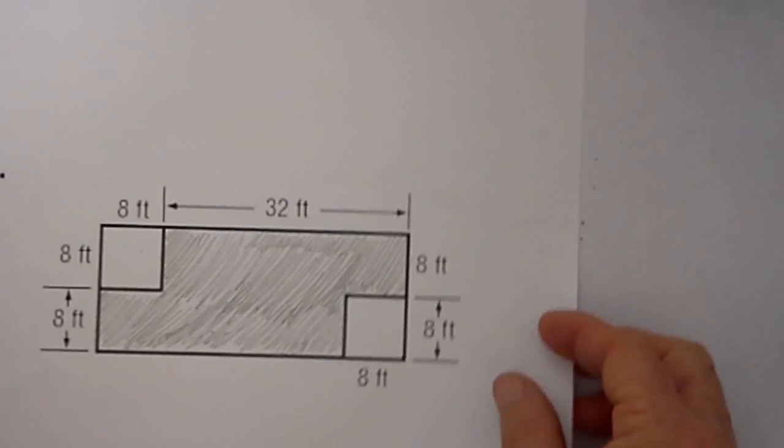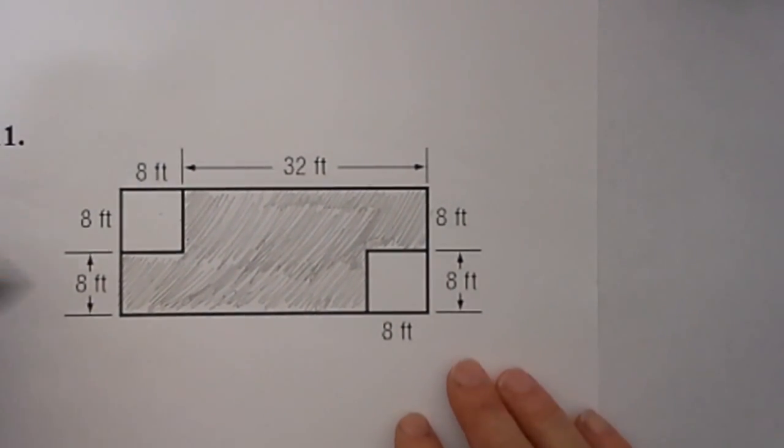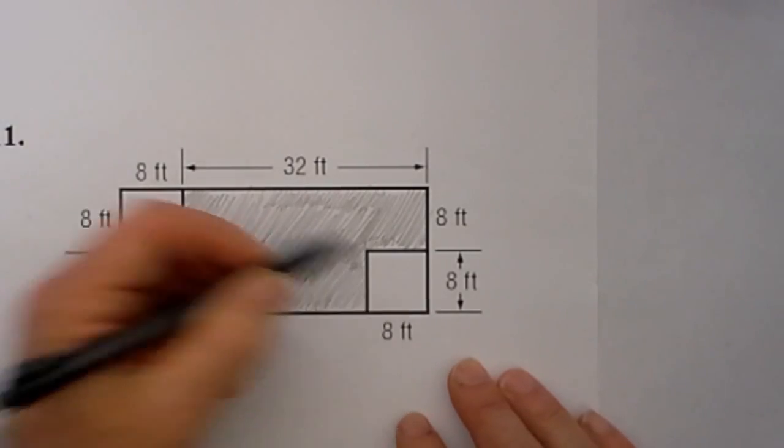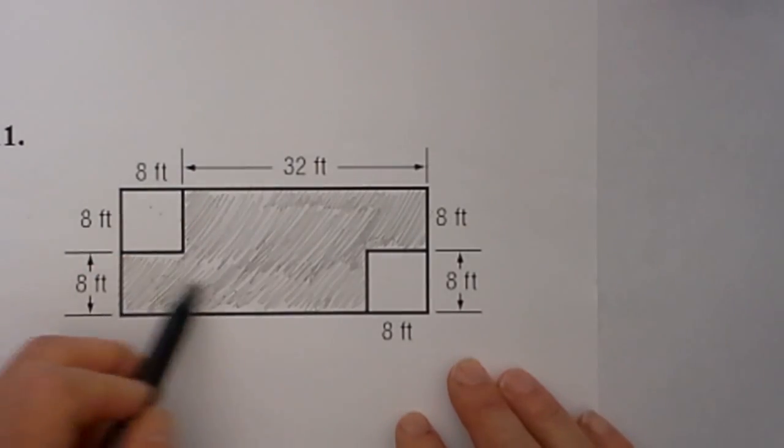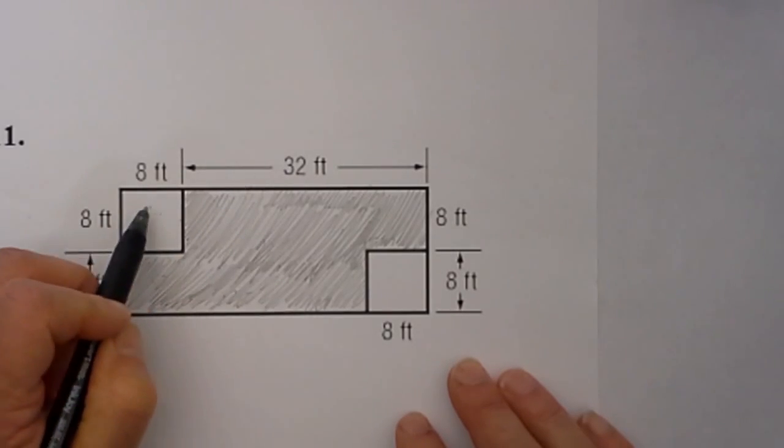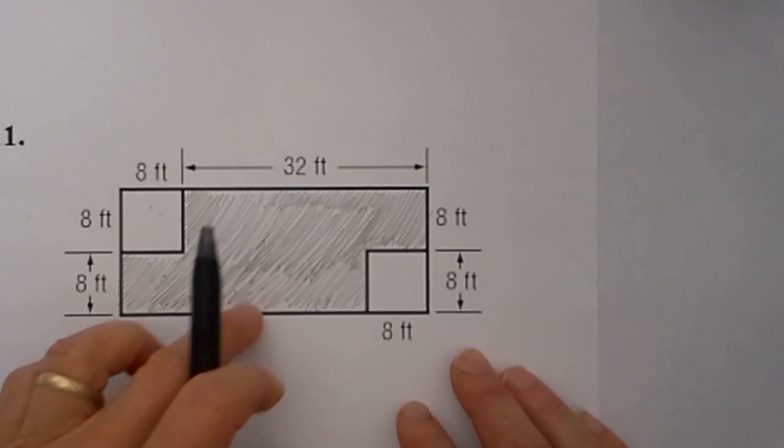Let's jump in and work a second one. In this one we will find the area of the shaded area. So let's see what we have. We have a rectangle and then we have two smaller boxes. So to find the shaded area, all we need to do is find the area of the rectangle and subtract out the area of the two boxes. So let's go ahead and begin.